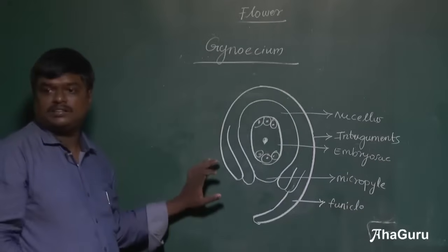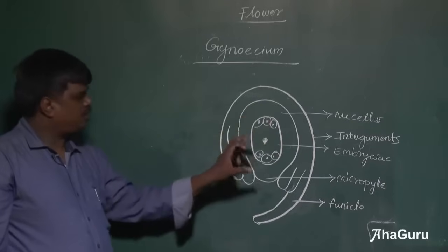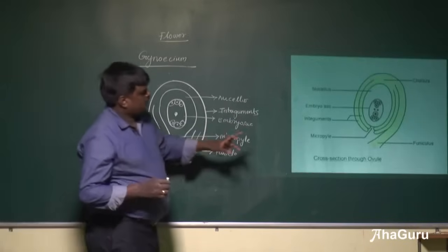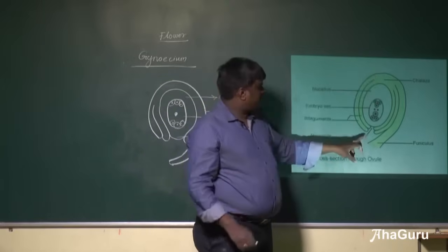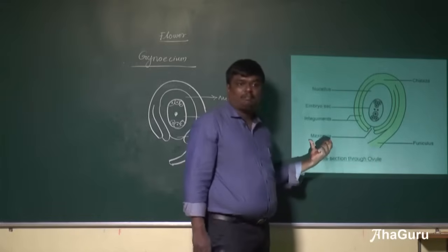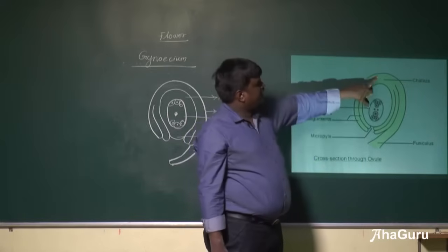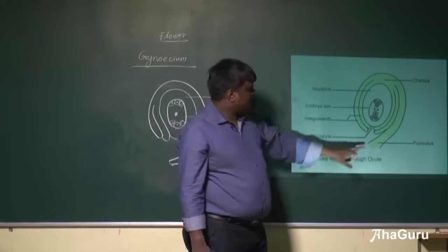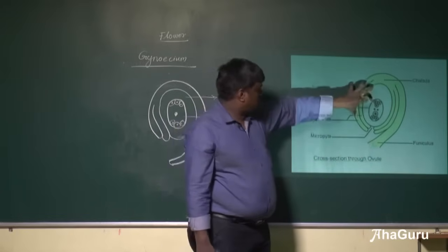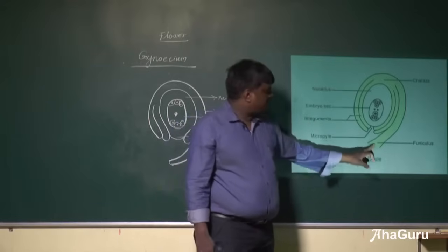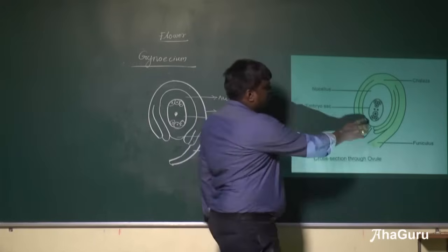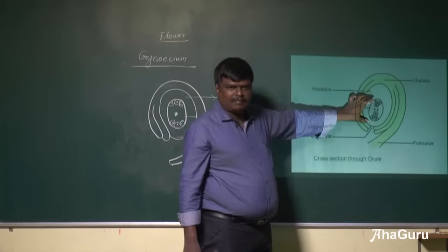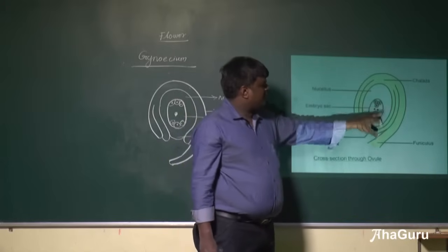This is the structure of the ovary and embryo sac. The embryo sac has two ends: the end where the micropyle is present is called the micropyle end, and the opposite end is called the chalaza end. The funicle attaches the whole ovule to the ovary. At the center is the nucellus, and within it is the embryo sac, which contains the female gamete. The embryo sac has eight cells in total.